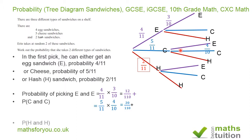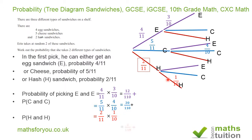For the hash sandwich, the probability of picking a hash sandwich first and a hash sandwich second is 2 over 11 times 1 over 10, which gives us 2 over 110.